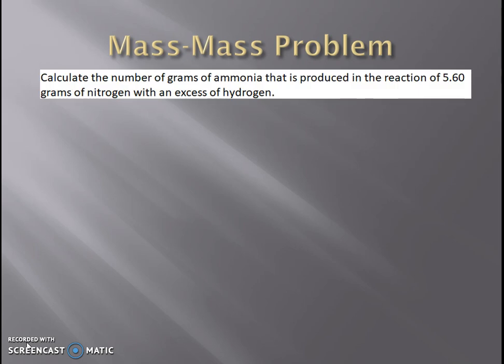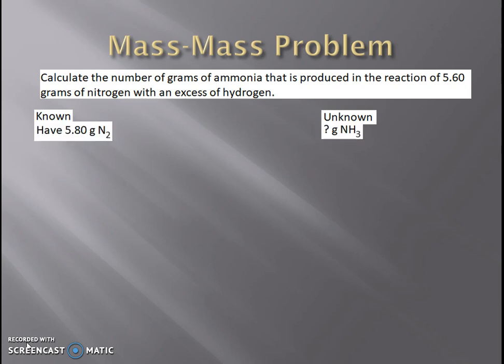We're going to take that same reaction of nitrogen and hydrogen combined to make ammonia, but now we have 5.6 grams of nitrogen which are going to react with excess hydrogen — meaning there's plenty of it and it won't run out, so it's the nitrogen that will run out. How many grams of ammonia can we make with that 5.6 grams of nitrogen? We're trying to calculate grams of ammonia, and we know we have 5.6 grams of nitrogen.